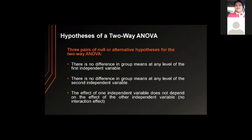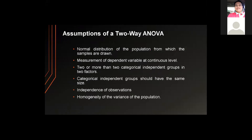There are three pairs of null or alternative hypotheses for the two-way ANOVA. First, there is no difference in group means at any level of the second independent variable. And last, the effect of one independent variable does not depend on the effect of the other independent variable. Assumptions of a two-way ANOVA: first, normal distribution of the population from which the samples are drawn.